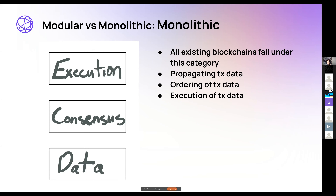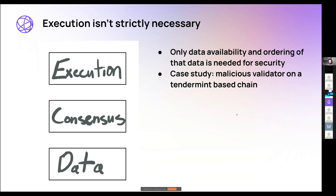By separating execution from consensus and data availability, we can increase throughput at the very least — maybe we don't fully scale but we do increase throughput.